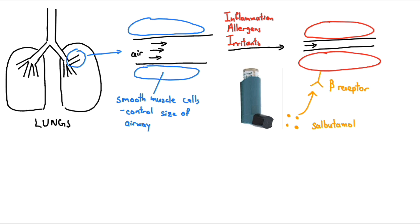Through catalyzing the conversion of ATP to cyclic AMP, the medication results in a relaxation of bronchial smooth muscle cells, opening up our airways and improving our breathing.